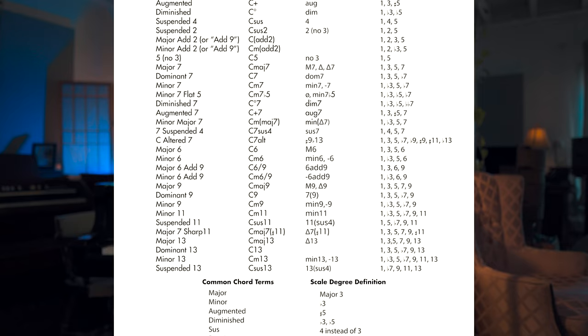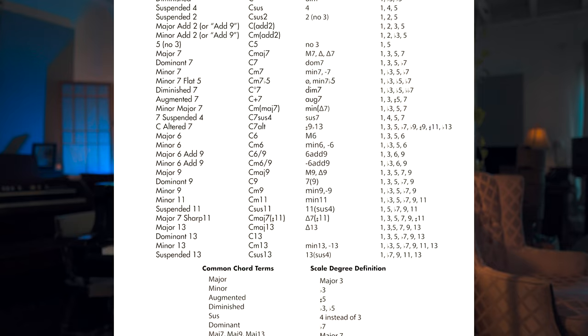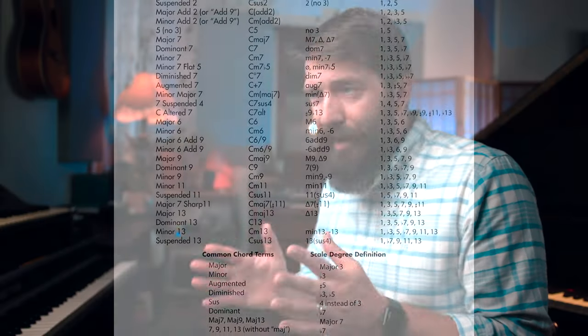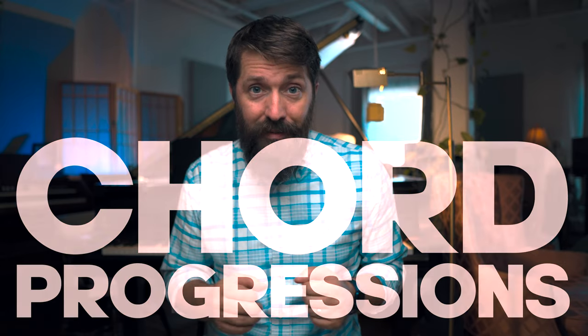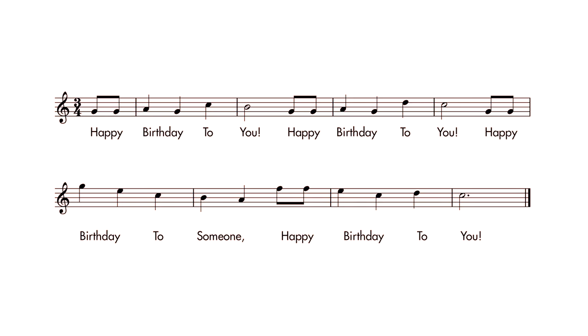The second way I like to use scale degrees is actually my favorite way, which is to label chord progressions. Each chord just gets a number for whatever note it is in the scale, for whatever key you're in. Let me show you an example with a simple song like 'Happy Birthday.'